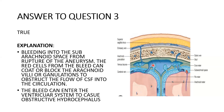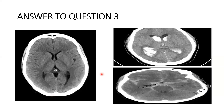Another mechanism is that the bleed can enter the ventricular system to cause obstructive hydrocephalus. In this CT scan you can see bleeding within the lateral ventricles and a massive dilatation of the ventricles. So the two mechanisms are: the bleed coats the arachnoid villi preventing CSF absorption, or bleeding enters the ventricular system to cause obstructive hydrocephalus.